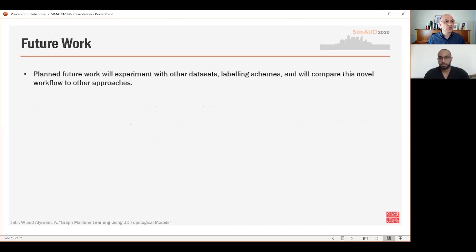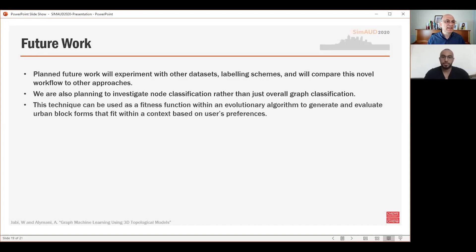Our planned future work will experiment with other datasets, labeling schemes, and will compare this novel workflow to other approaches. We are also planning to investigate node classification rather than just overall graph classification. This technique can be used as a fitness function within an evolutionary algorithm to generate and evaluate urban block forms that fit within a context based on user preferences.